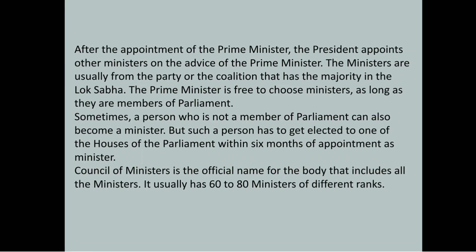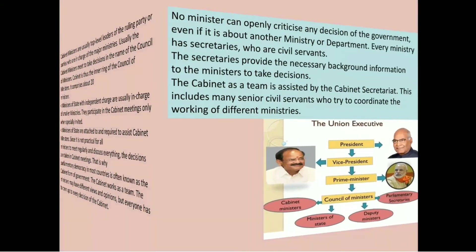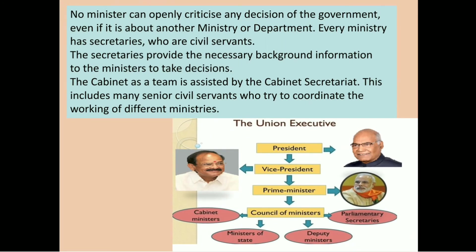Council of Ministers is the official name for the body that includes all the ministers. It usually has 60 to 80 ministers of different ranks. No minister can openly criticize any decision of the government, even if it is about their own ministry or department. Every ministry has secretaries who are civil servants. The secretaries provide the necessary background information to the ministers to take decisions. The cabinet as a team is assisted by the cabinet secretariat, which includes many senior civil servants who coordinate the working of different ministers.